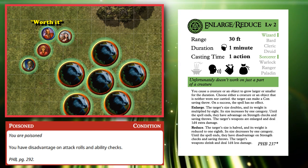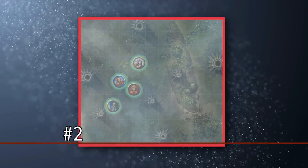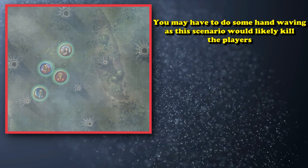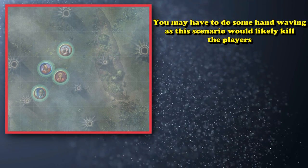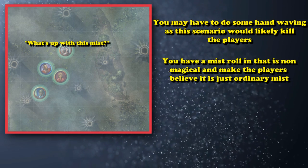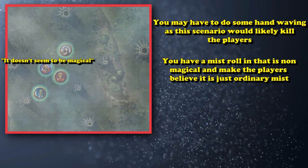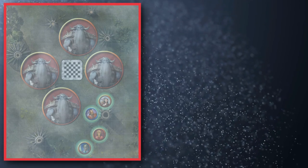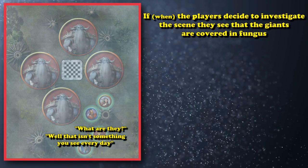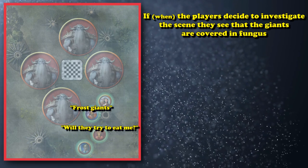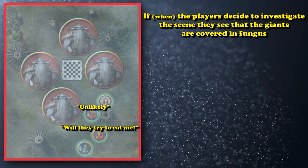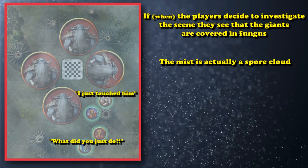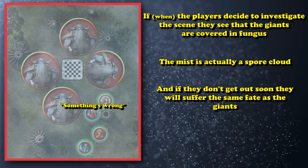And at number 2, we have the Misty Spores. The setup requires a little bit of hand-waving, because normally this scenario comes across as something that should definitely kill the players. An unexpected mist comes into the area that obscures the party's vision, but can still be seen through well enough to navigate. They then come upon a group of giants sitting motionless around a giant chessboard, with their eyes very intent on the pieces. If the players investigate, they discover fungus growing from the giants' eyelids and hair, and the bodies will slump over if touched — because the mist is actually spores being released by nearby fungus, and the players should get out as soon as possible.